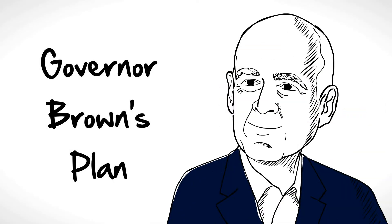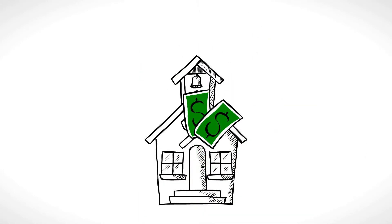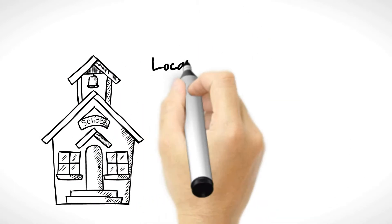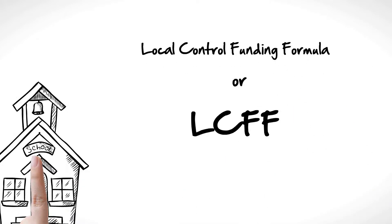The governor has a plan to fix these funding problems. He wants to improve the way we fund schools. The plan is called Local Control Funding Formula, or LCFF. The plan does the following.